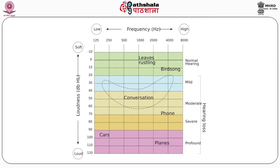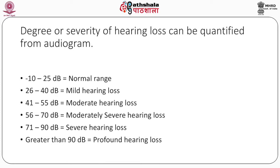The degree of severity of hearing loss can be quantified from the audiogram. Normal adult hearing thresholds are generally considered to be less than 25 decibel. If the hearing threshold is above that range, hearing loss is confirmed. According to the hearing threshold level identified in the audiogram, severity can be classified as: minus 10 to 25 dB — normal; 26 to 40 dB — mild hearing loss; 41 to 55 dB — moderate hearing loss; 56 to 70 dB — moderately severe hearing loss; 71 to 90 dB — severe hearing loss; and greater than 90 dB — profound hearing loss.